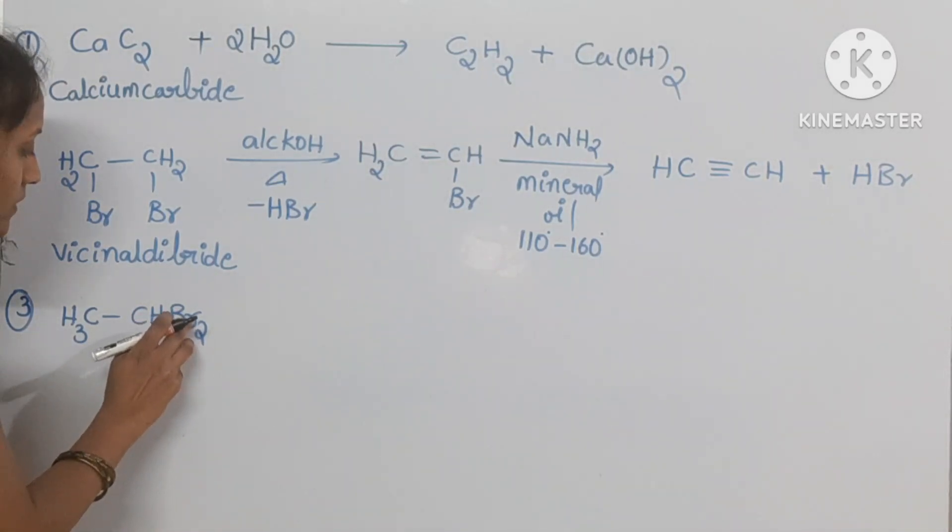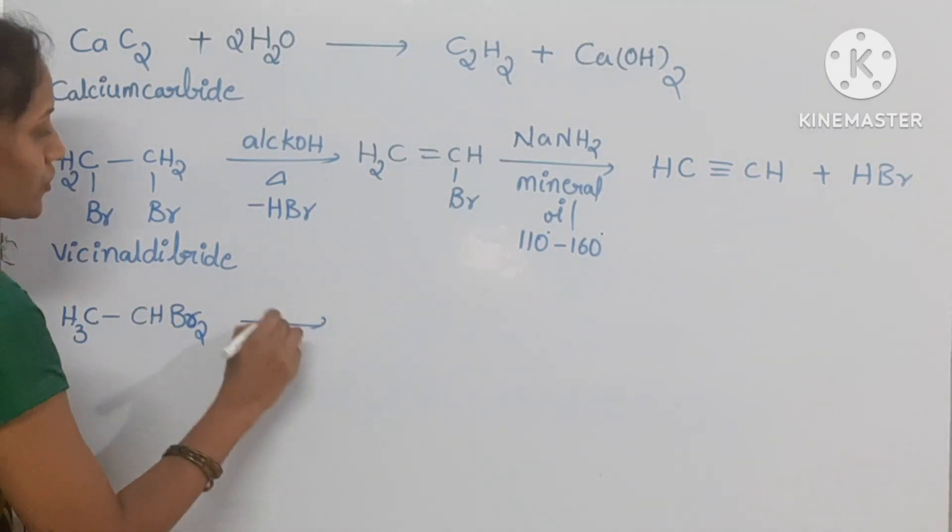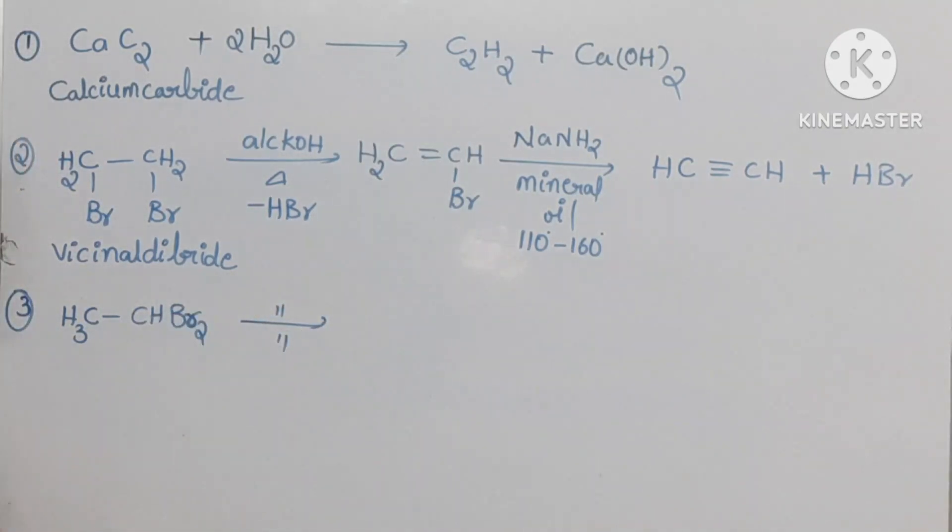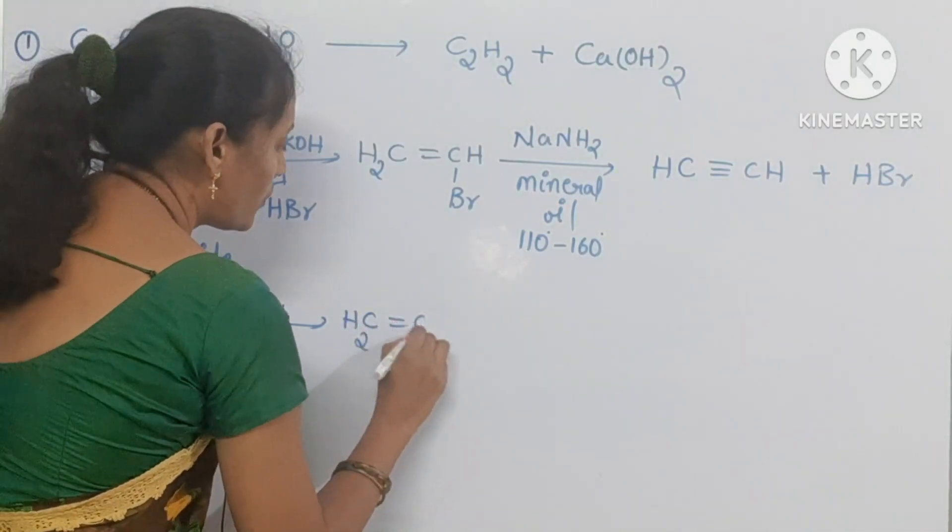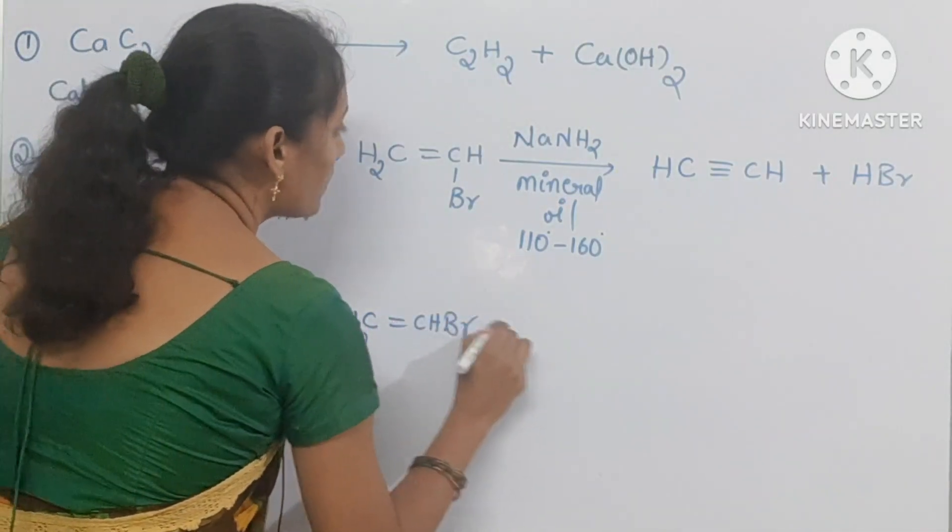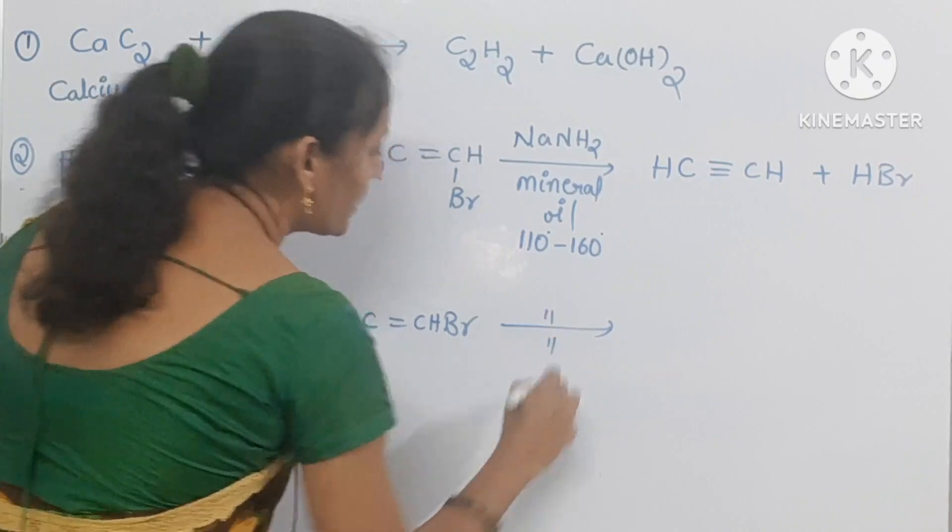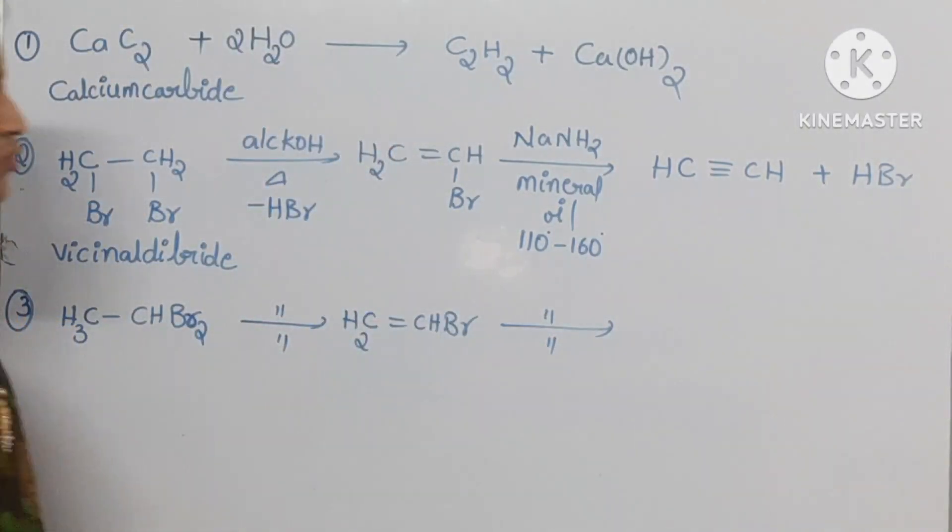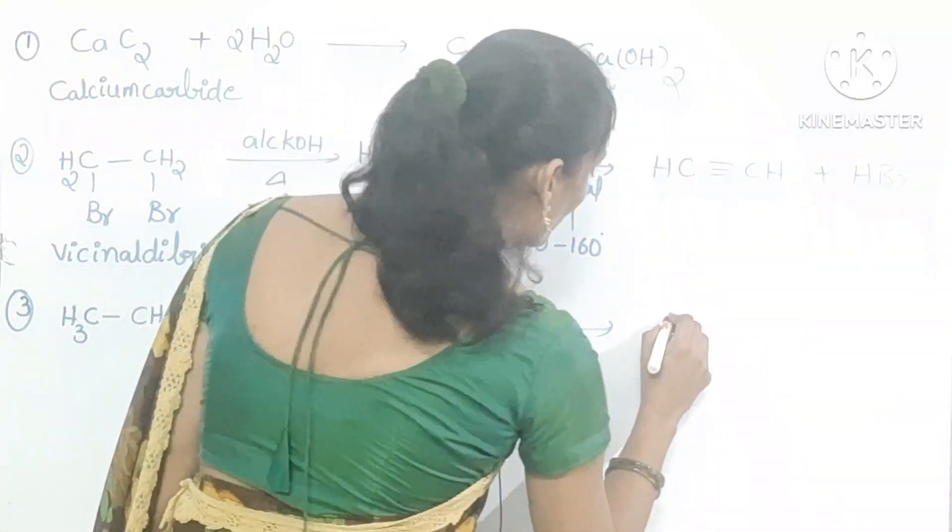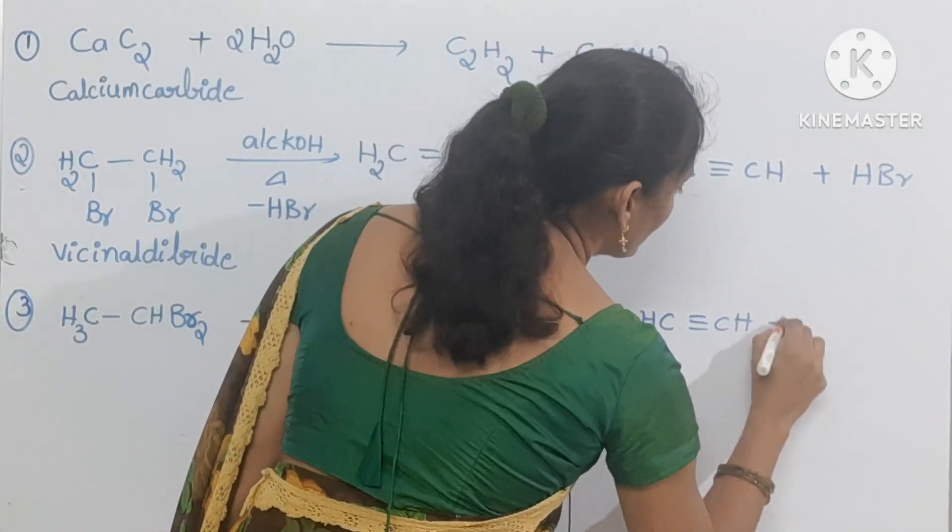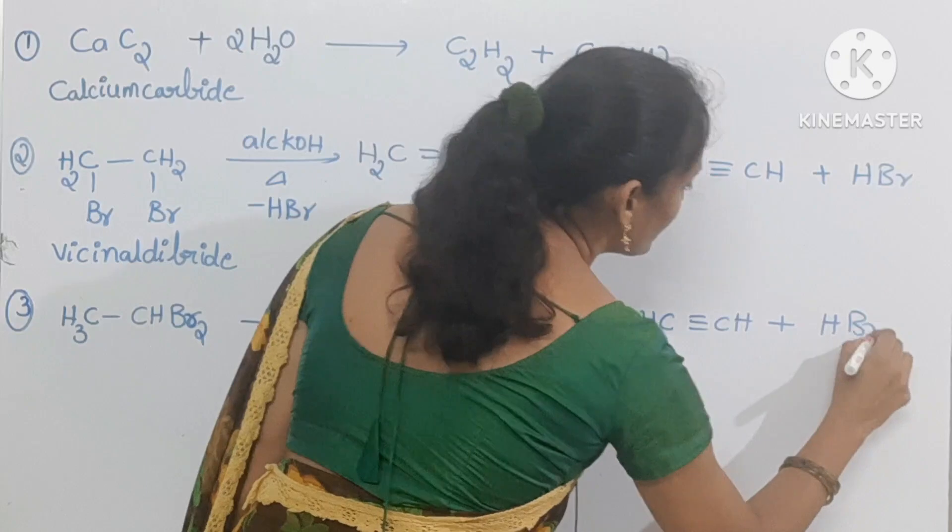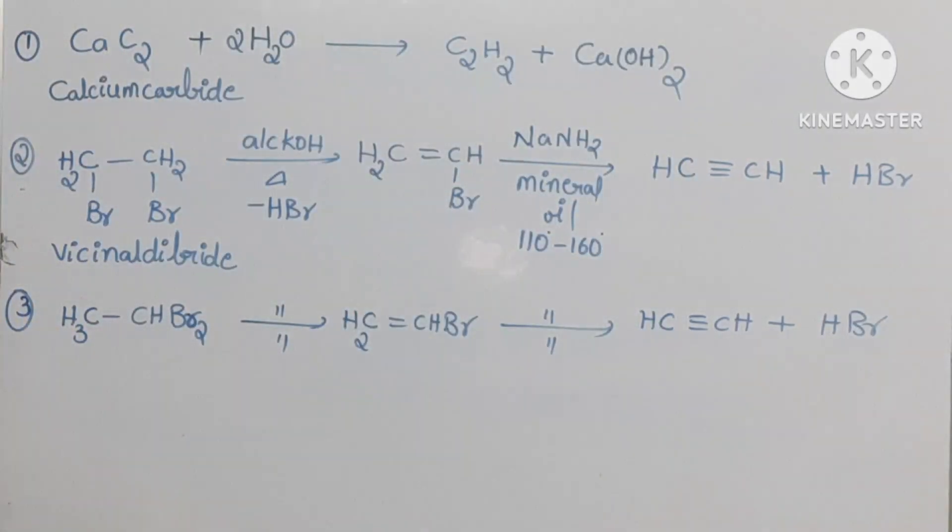Alcoholic KOH heating, you will get CH2 double bond CHBr. And the next step also, here also same reagents we should use. You will get the final product CH triple bond CH and eliminated product is HBr. Here also two moles of HBr would be eliminated.